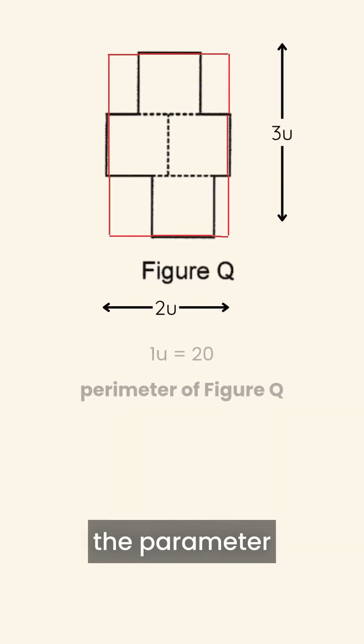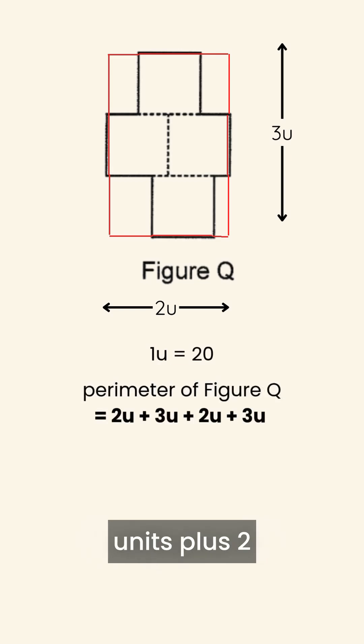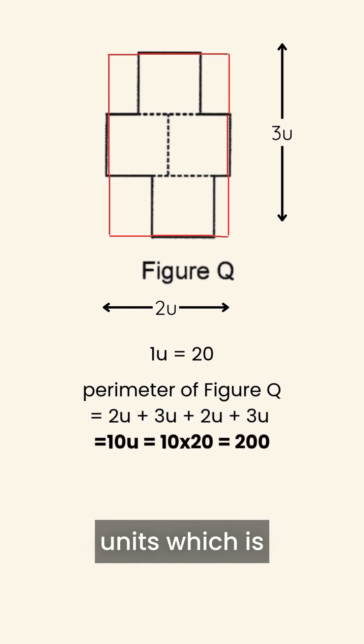And therefore, the perimeter of figure Q is equal to 2 units plus 3 units plus 2 units plus 3 units, which is equal to 10 units, which is also equal to 10 times 20, which is equal to 200 centimeters. Therefore, figure Q perimeter is 200 centimeters.